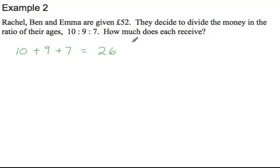So now we can figure out how much money per part. Well, there's 52 pounds in total that they get to split between the three of them. And there's 26 parts. So 52 pounds divided by 26. If we calculate that, we get 2. So there's 2 pounds for every part.